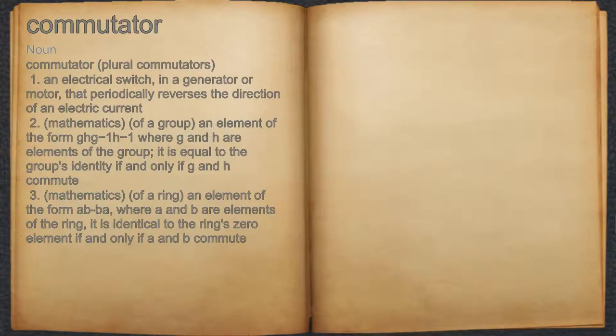Commutator. Noun. 1. An electrical switch, in a generator or motor, that periodically reverses the direction of an electric current.